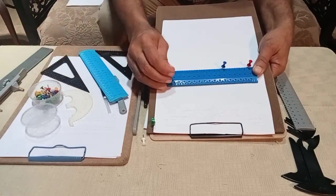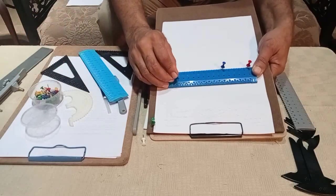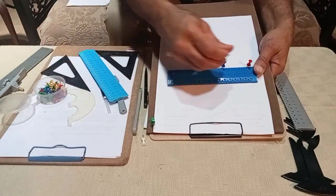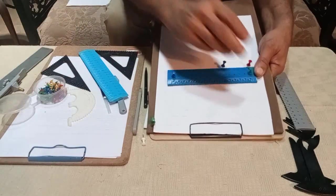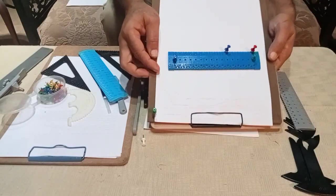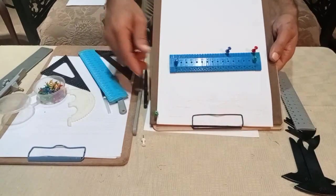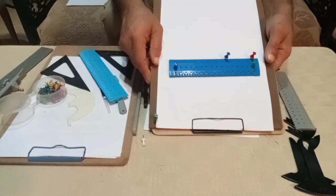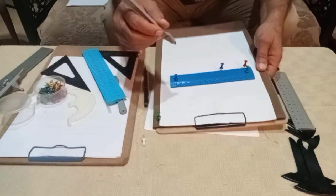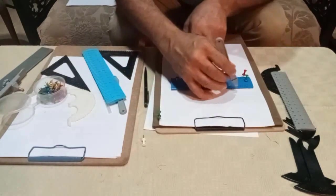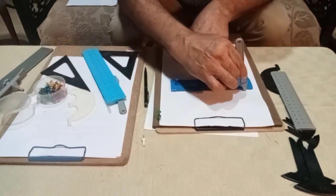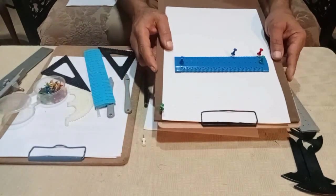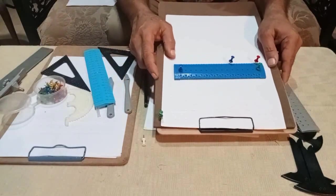You can also fasten the ruler to the page using thumbtacks. There are little holes placed at 10 millimeter intervals from beginning to end of the ruler. You can fasten your ruler to the drawing sheet or board. The ruler with the roulette helps you draw straight lines and measure them.